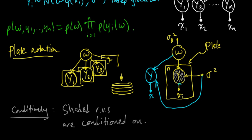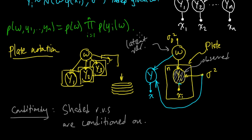These shaded nodes are the observed random variables. A random variable which is not observed and acts as a sort of parameter is often referred to as a latent variable or a hidden variable. So W in this case would be a hidden or latent variable. That was the graphical model for Bayesian linear regression, and next we'll look at Bayesian naive Bayes.